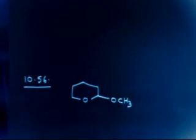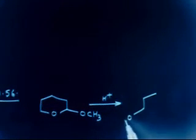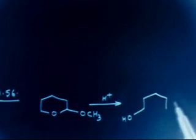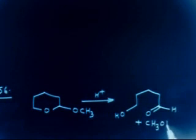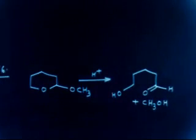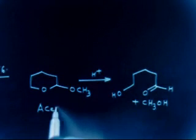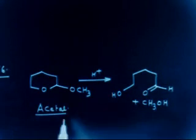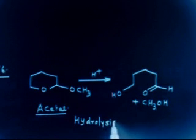This compound has OCS3 — this is not an ether, this is an acetal. It reacts with H+ and the final product you are getting is OH with a double bond O, hydrogen, plus CS3OH. Let us show the mechanism for this reaction. This is a hydrolysis of acetal.